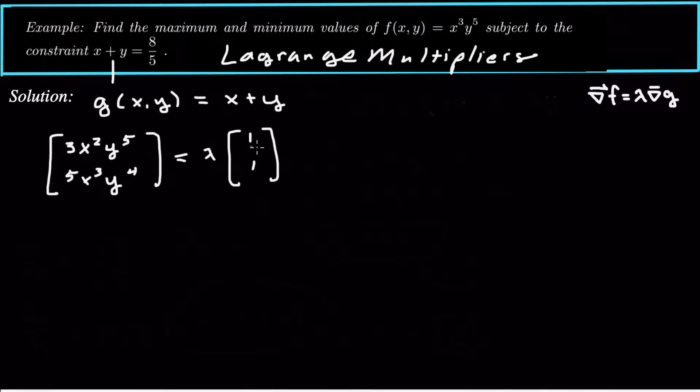Here the derivative of g with respect to x is 1, derivative of g with respect to y is 1. That gives us two equations here. So let's write those two equations: 3x squared y to the 5th equals lambda, and then the second equation, 5x cubed y to the 4th equals lambda.